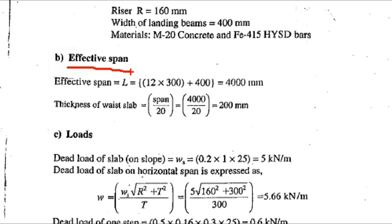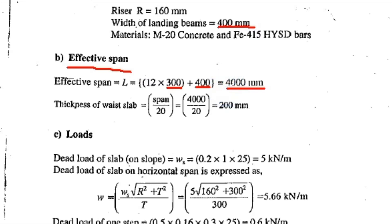First we have to find out the effective span. Effective span L is equal to 12 into 300 — 12 is the number of steps in flight and 300 mm is the tread dimension — plus 400 mm for the landing beam. So the total effective span is equal to 4000 mm.